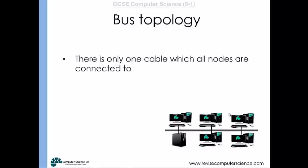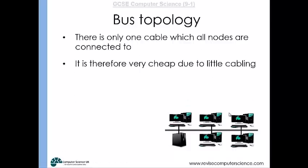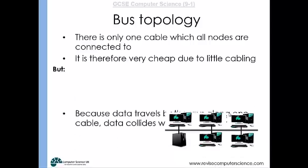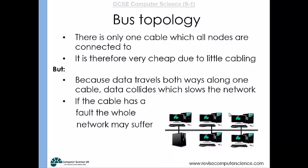With a bus topology, all nodes are connected to a single cable, making it very cheap. However, data travels both ways along the cable causing data collisions and slowing the network. If the cable breaks, the whole network is affected. It is only really useful over small areas.